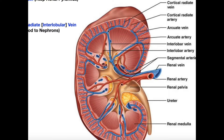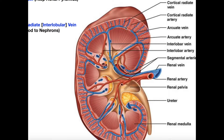Now, at the top of each renal pyramid, we have what are called arcuate arteries. The arcuate arteries go over the top of each of these renal pyramids. So we go from interlobar to arcuate arteries. These tiny arteries that branch from the arcuate arteries and go up into the cortex region of the kidney are called cortical radiate arteries.